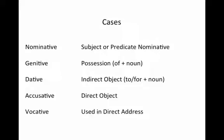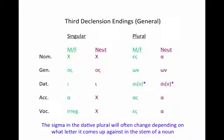And finally, the vocative is used in direct address. So let's look at third declension endings in general, and then we'll see how they butt up against different stems.